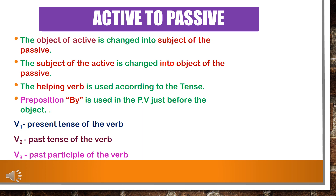Now we will see the rules of active and passive voice. Rules are very important to change a sentence from active voice into passive voice. The following are the main rules. First basic rule: the object of active is changed into the subject of the passive, and the subject of the active is changed into the object of the passive — they swap places. Second rule: change the helping verb according to the tense. Third rule: the preposition 'by' is used in the passive voice just before the object.